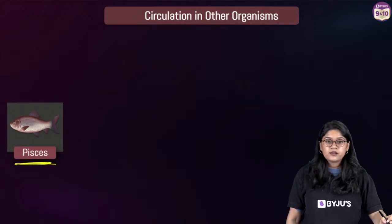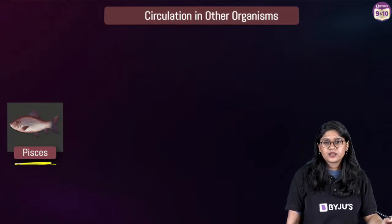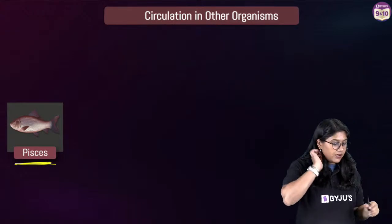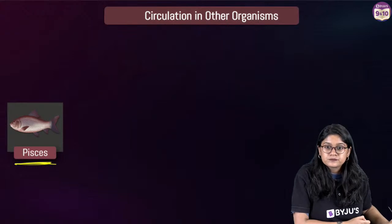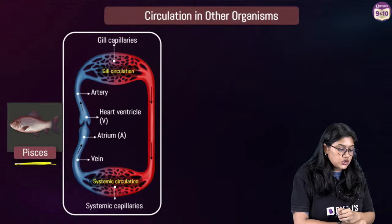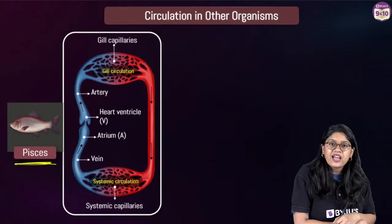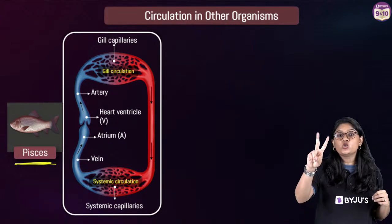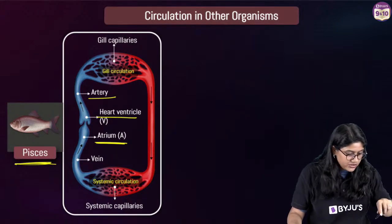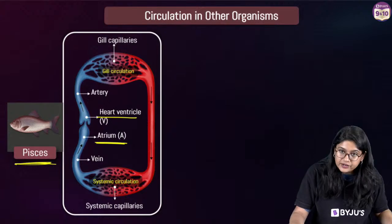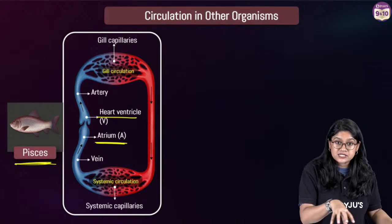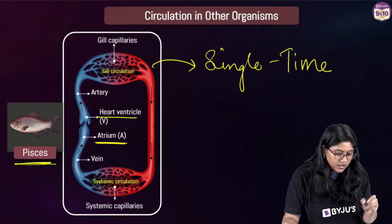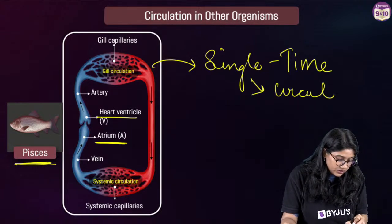Fish have single circulation. They have one atrium and one ventricle — two chambers. The blood inside the fish travels only a single time — they have only single circulation.